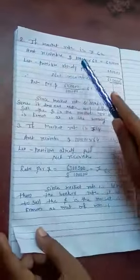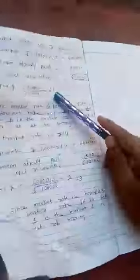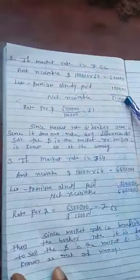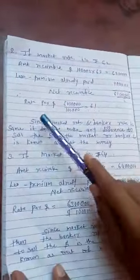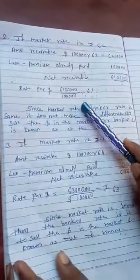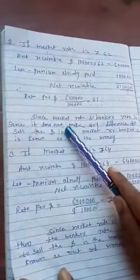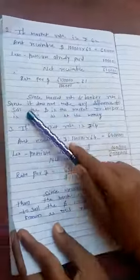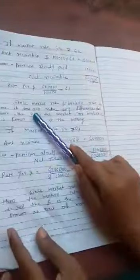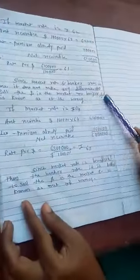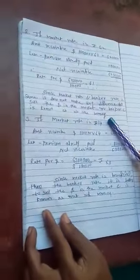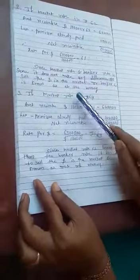For at the money, amount receivable is 1 lakh into 62, which is 62 lakhs, less premium already paid of 1 lakh, giving 61 lakhs. The rate per dollar is 61 lakh divided by 1 lakh, which equals 61. The market rate and the banker rate are the same. It does not make any difference to sell the dollars in the market or to the banker. This is known as at the money.